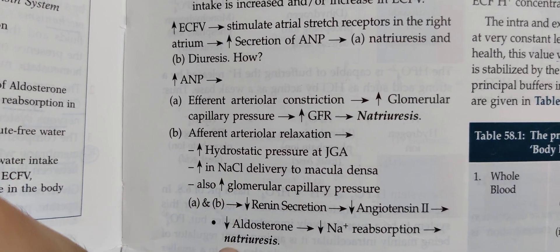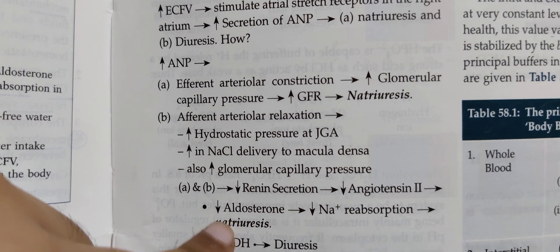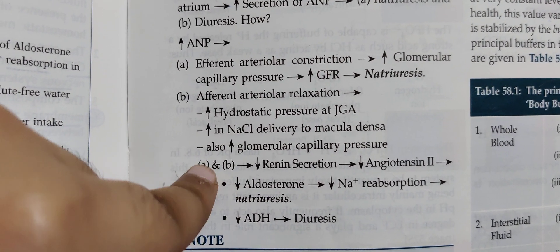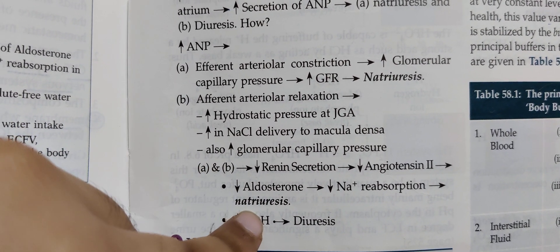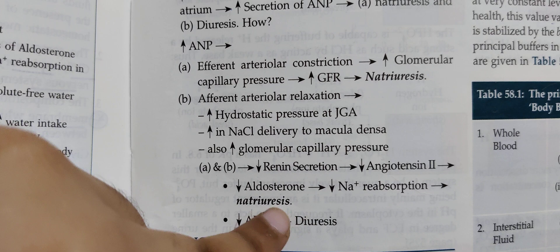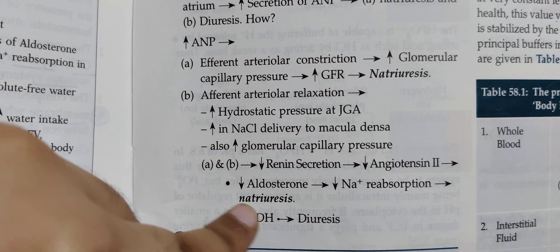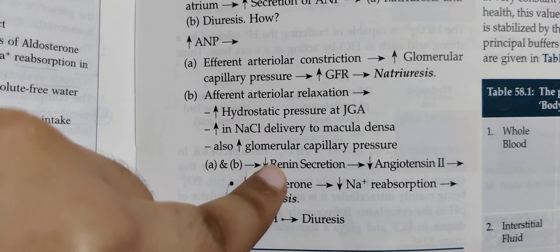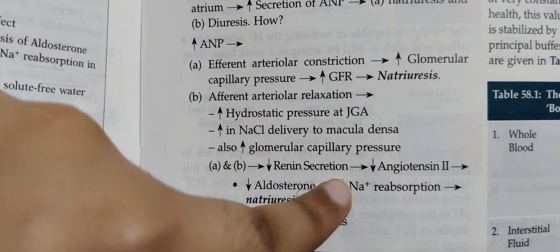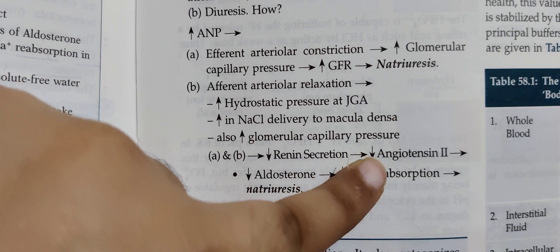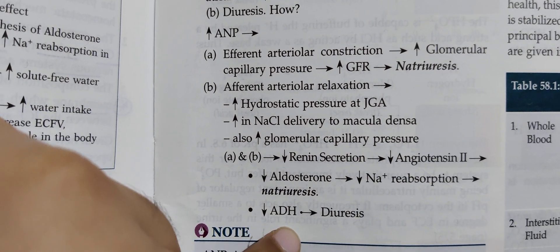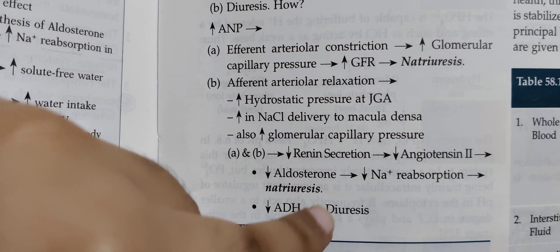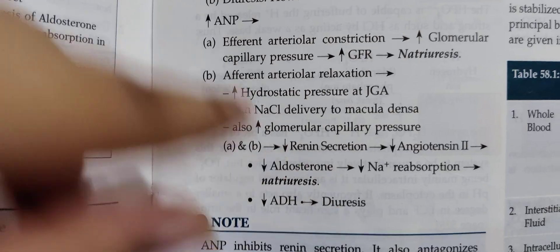When pressure increases, there will also be natriuresis. For diuresis to occur, the increased pressure decreases renin secretion, so there is no angiotensin 2, and therefore no stimulus for ADH secretion. ADH will decrease, which will lead to diuresis.